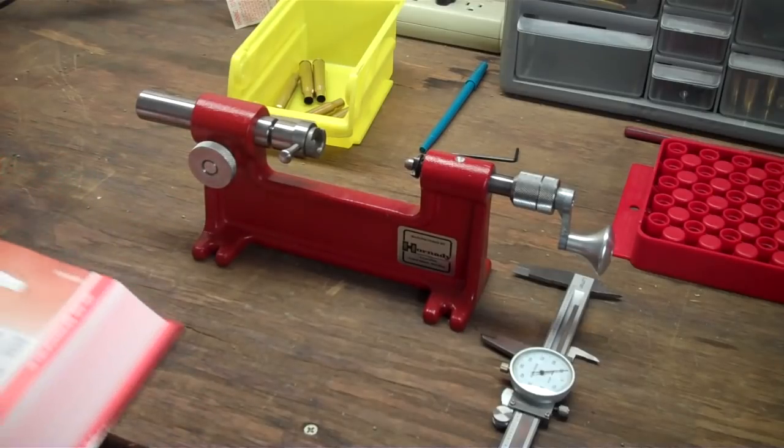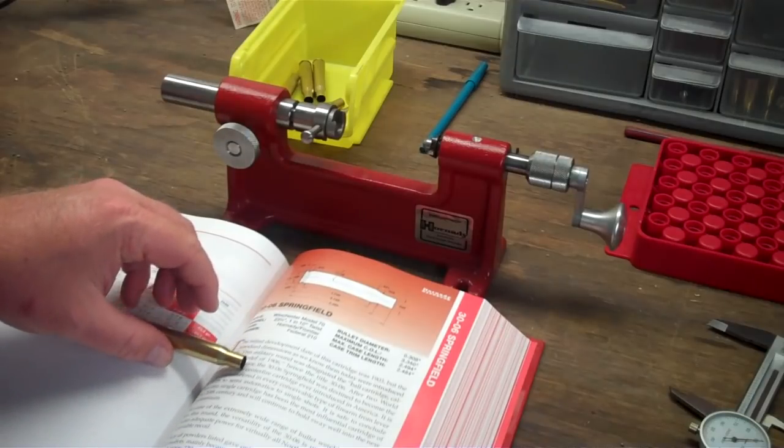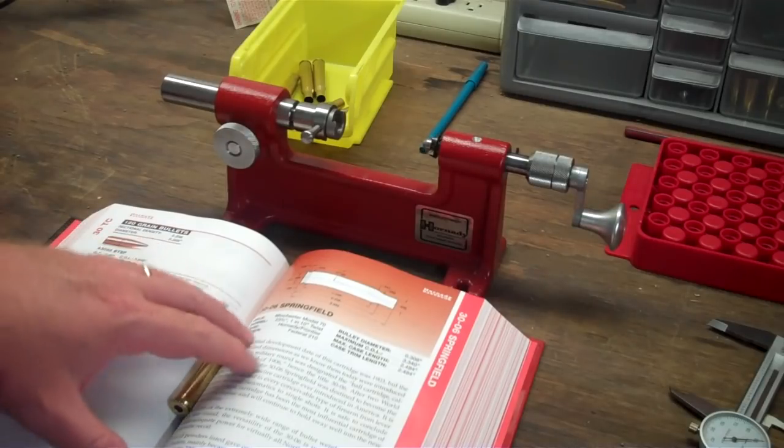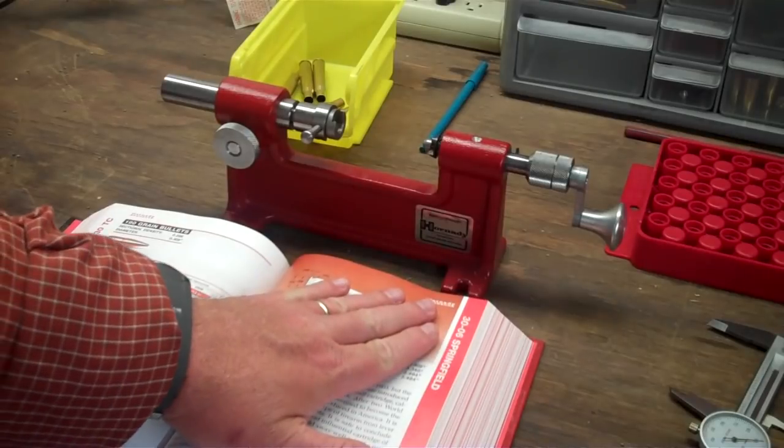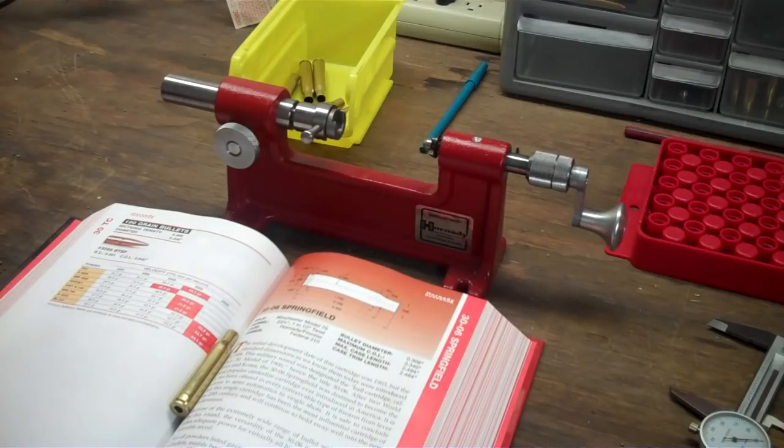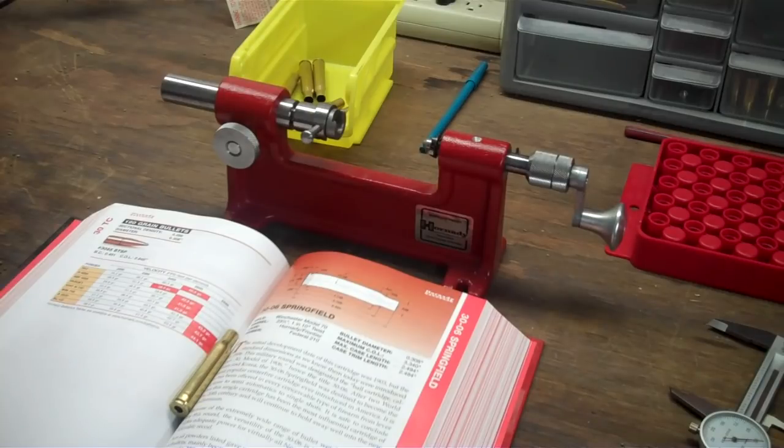Now one of the first things that we do when we're going to start reloading and setting up cases is we need to take a look at the overall dimensions of the case. What I have here is a Hornady manual, and I've turned it to the .30-06 Springfield page. This particular page gives me some valuable information such as the maximum case overall length, the maximum case length, and the case trim length. For 30-06, it says that the maximum case length is 2.494 and the case trim length is 2.484.